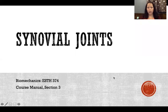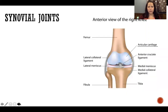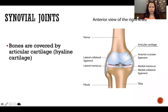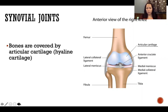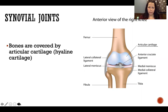In this video I'm going to talk about synovial joints and how we classify them. Bones are covered by articular cartilage, which is made of hyaline cartilage — a smooth, slightly bluish type of cartilage that reduces friction at the joint surface.